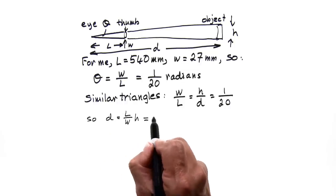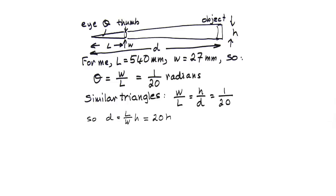Rearranging, D equals 20H. Distance is 20 times height.